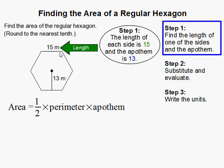In this problem we're given the length of each side is 15. I know each side is 15 because it's stated it's a regular hexagon, and here we're given the apothem is 13.